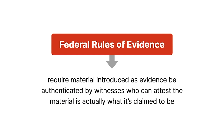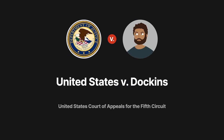The federal rules of evidence require that material introduced as evidence generally be authenticated by witnesses who can attest that the material is actually what it's claimed to be. The 1993 case of United States v. Dawkins explores this requirement in the context of a felony weapons charge.